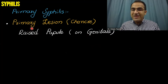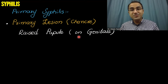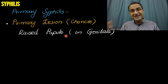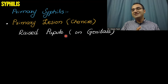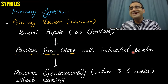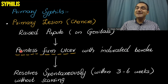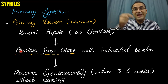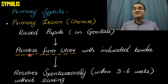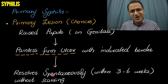In primary syphilis, the primary lesion is the chancre. The chancre is a raised papule mainly on the genitals — around the penis, around the anus, or even around the mouth — and it identifies the type of sexual activity. Wherever there is contact of skin with the lesion, there is formation of a chancre. The chancre is a painless firm ulcer with an indurated border. It is painless because syphilis affects the vessels supplying the nerves, causing the nerves to die. It resolves spontaneously within 3 to 6 weeks without any scarring.